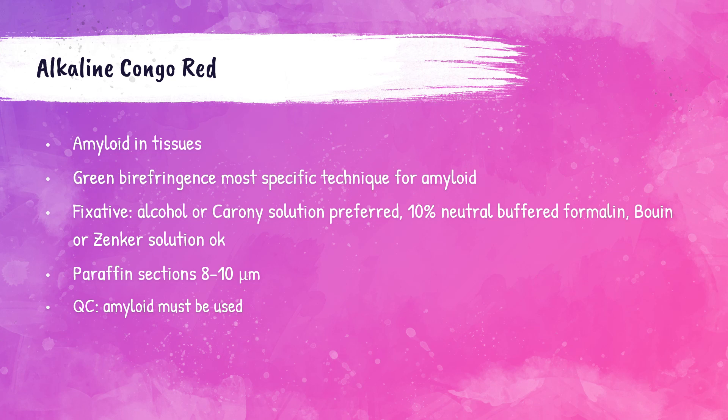Paraffin tissue sections should be cut from 8 to 10 microns in thickness, and tissues that contain amyloid must be used for quality control for this stain.